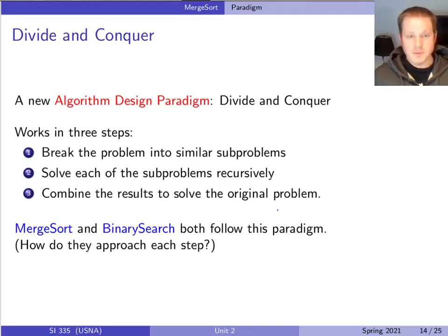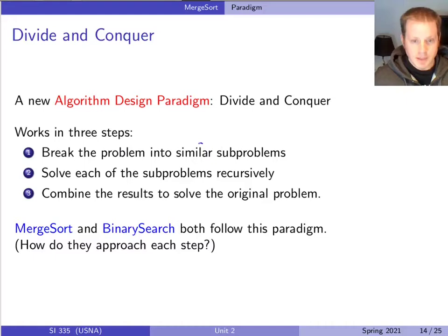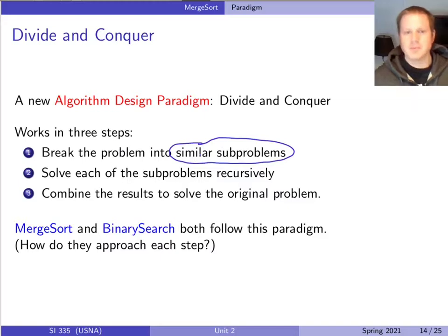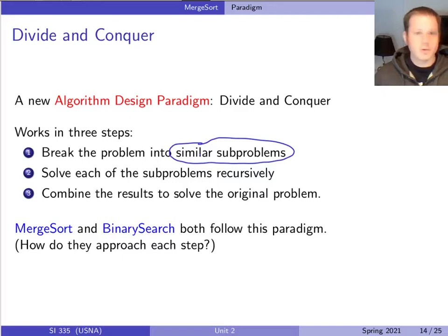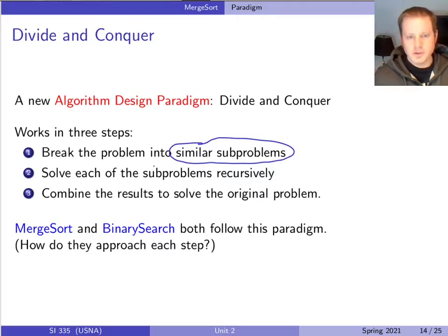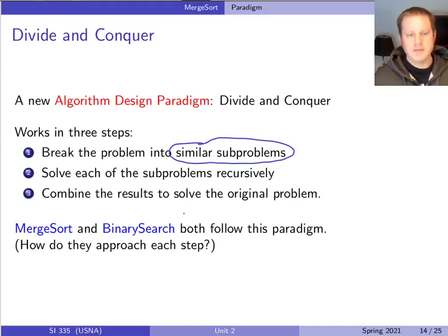In terms of computer algorithms, that's really what it means as well. You want to break your large problem into similar sub-problems — this is really key, similar sub-problems. When I want to design a divide and conquer solution for a task like sorting, you're going to end up sorting some smaller lists in order to sort the bigger list eventually. It has to be similar because we're going to use recursion to solve those sub-problems, and then combine the results. So it's: split it up, recursively solve, and then combine them back again.